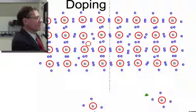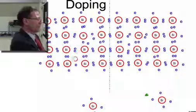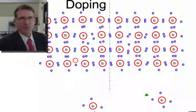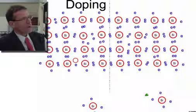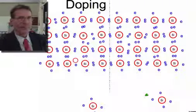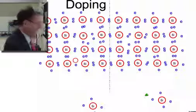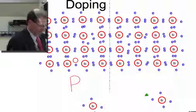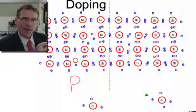This electron here might kind of wander up and fill that position there, which means now that the hole is going to appear there. So what we've got now is we've got charge carriers, things that can carry charge. On this side here, we've got holes that can migrate through the lattice.